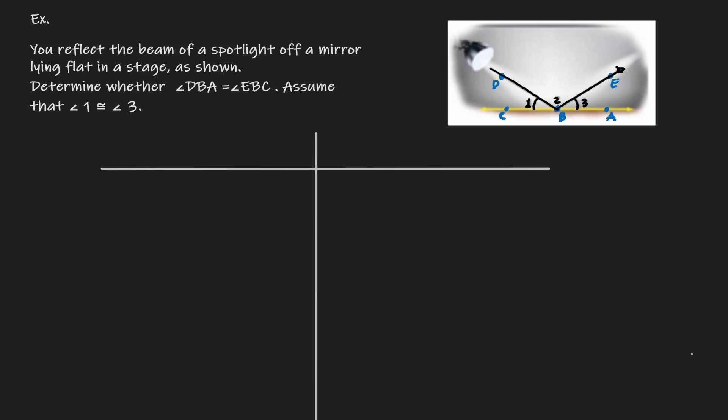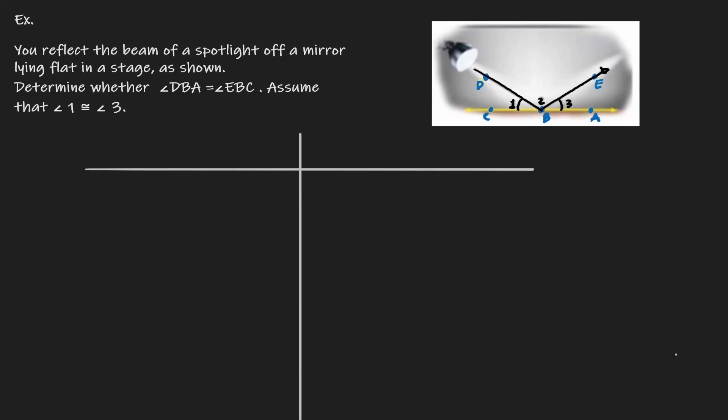Here we have a scenario. It says: you reflect the beam of a spotlight off a mirror laying flat on a stage, as shown in the figure on the right-hand side. We want to show that angle DBA is equal to angle EBC. We are given that angle 1 is equal to angle 2. Any time you are looking into a proof, you want to know two things: what is the objective, and what have you been given to work toward that objective?